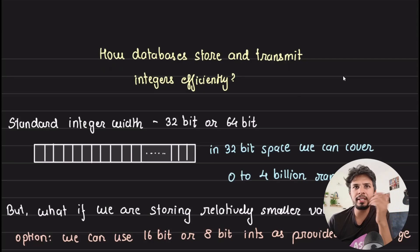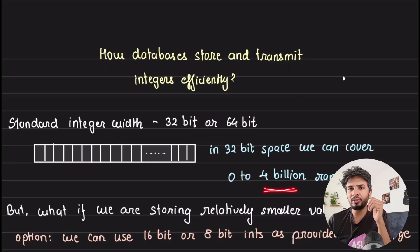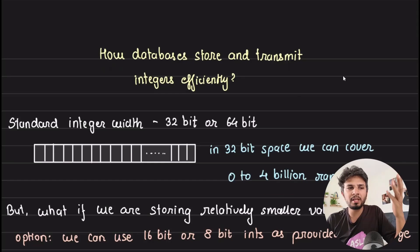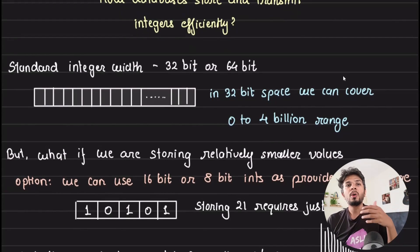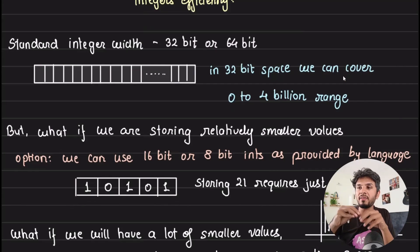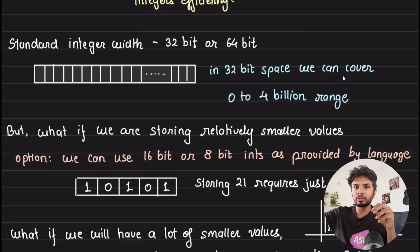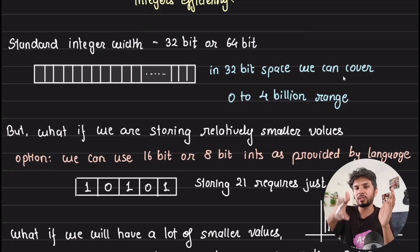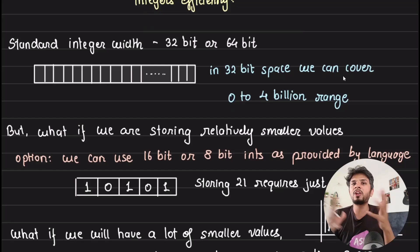A standard 32-bit integer covers a very wide range of numbers — 0 to 4 billion — but for common use cases we typically work with a lot of smaller values. If we are working mostly with smaller values, why not use a 16-bit or an 8-bit integer? But what if we still occasionally have large values, not as frequently as smaller ones? We would still have to provision a 32-bit or 64-bit integer.